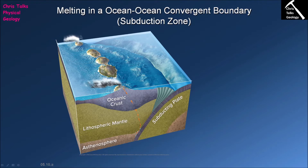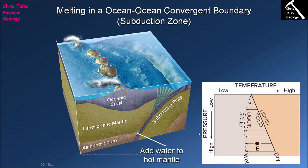On the slide here we have a picture of an ocean-ocean convergent plate boundary — two pieces of oceanic crust converging towards each other. One piece of oceanic crust will be pushed down into the mantle; this is the subducting plate. Around 150 kilometers down, the minerals in the subducting plate will begin to de-water, losing water that then interacts with the mantle rocks above. This is hydration or flux melting.